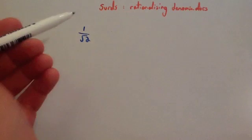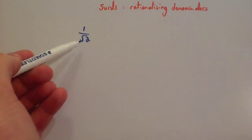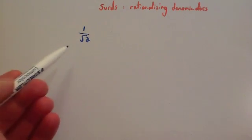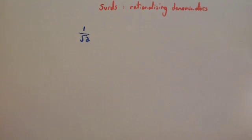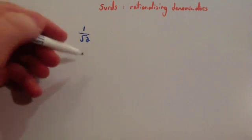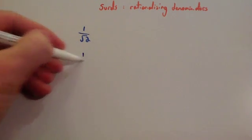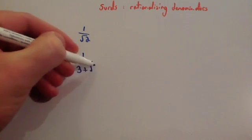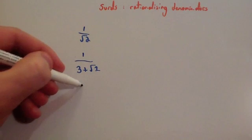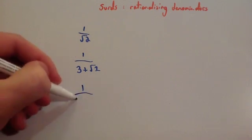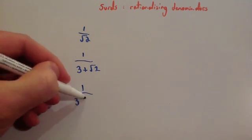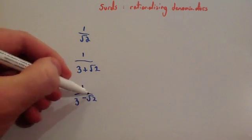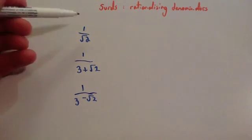So what we're going to do is we're going to get rid of this. Now depending on what's on the denominator, it would depend on which technique you're going to use. So for instance, if you had this, or if you had this, or if you had this, you were going to use three different little techniques.